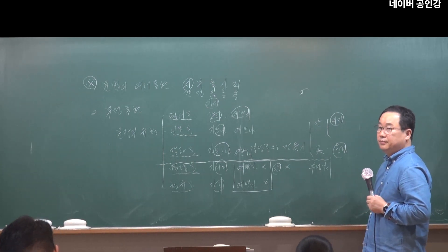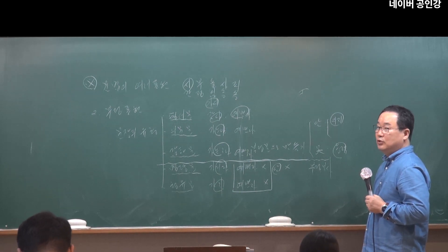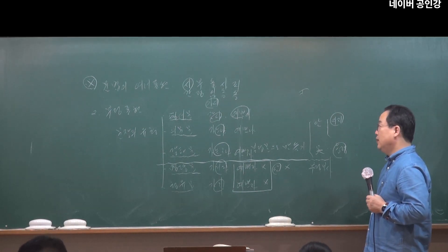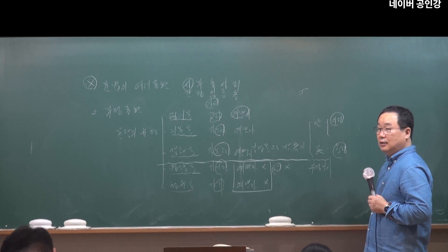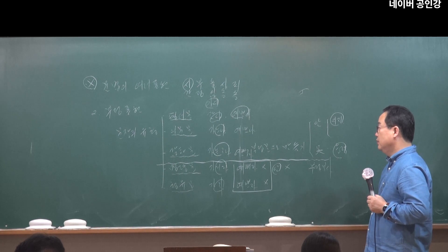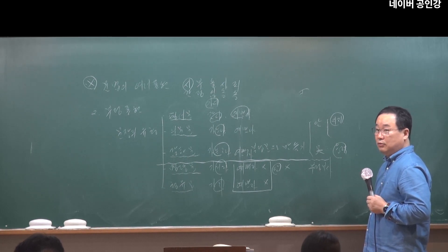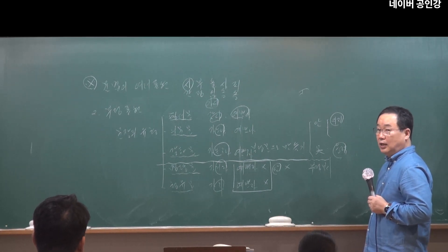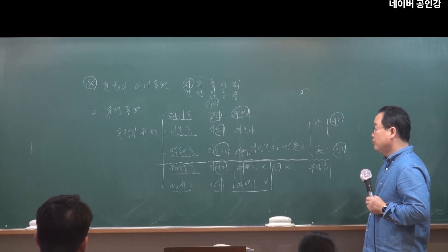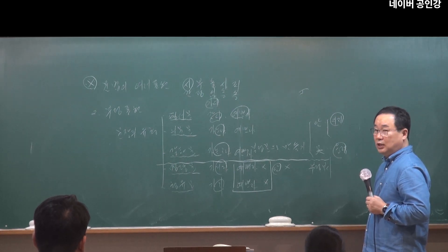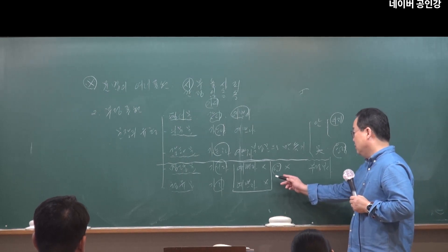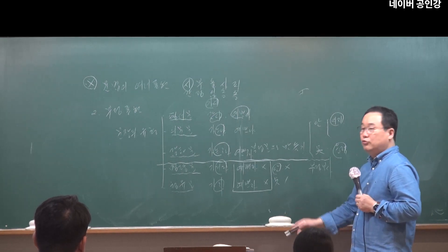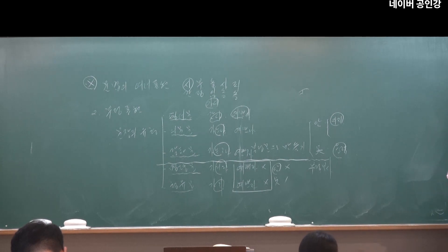'못'의 경우를 보겠습니다. '못 간다', 긴 부정문 형태로는 '가지 못한다'가 됩니다. '못 가느냐', '가지 못하느냐', '못 가는구나', '가지 못하는구나'도 됩니다. 그런데 '못 가거라', '가지 못하라', '못 가자', '가지 못하자'는 말이 안 됩니다. 결국 명령문과 청유문에서는 '안'도 '못'도 안 됩니다.